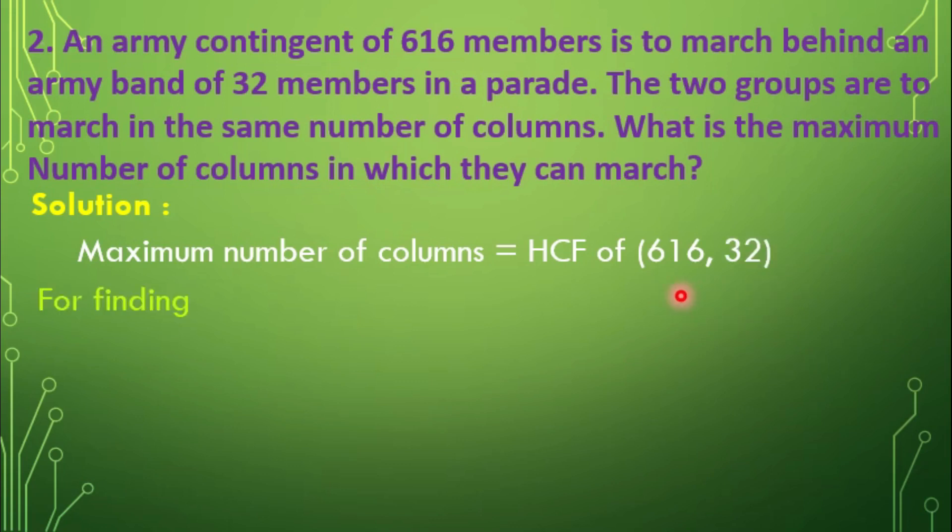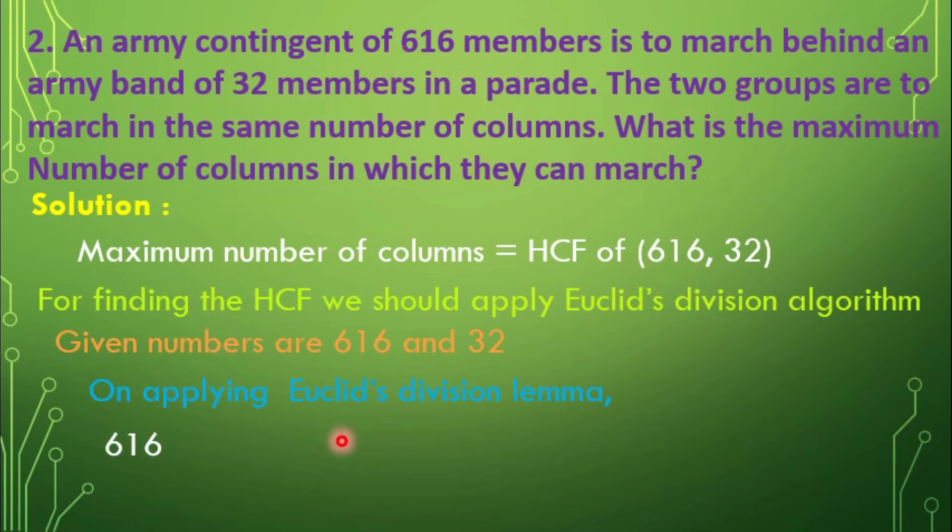For finding the HCF, we should apply Euclid's Division Algorithm. Given numbers are 616 and 32. On applying Euclid's Division Lemma, we have 616 equals 32 into 19 plus 8, since the remainder 8 not equal to 0.